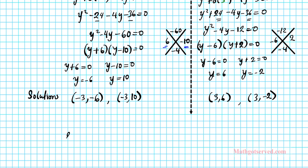So our solutions are (-3, -6), (-3, 10), (3, 6), and (3, -2). So what do these points mean? These points are the points where the parabola intersects with the ellipse. So there goes the solution to your system of conics.